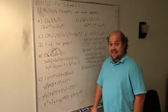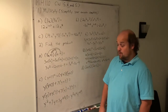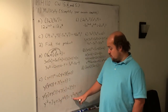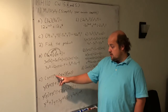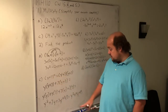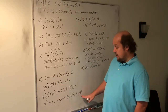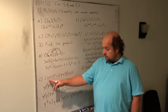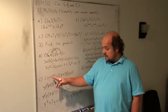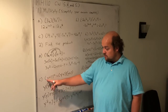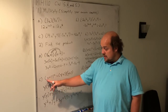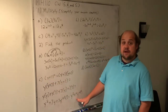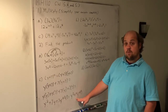Again, I can get there quicker with the shortcut: square the first term to get y squared, square the last term to get 49. For the middle term, multiply the two things together — 7 times y gives me 7y — and then multiply by 2, which is how I get to 14y.